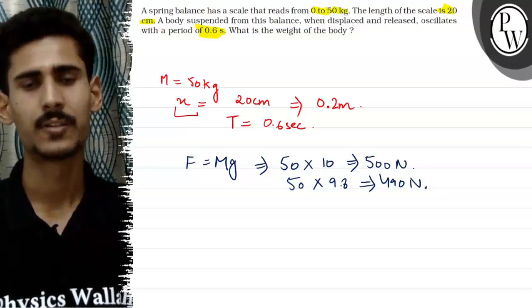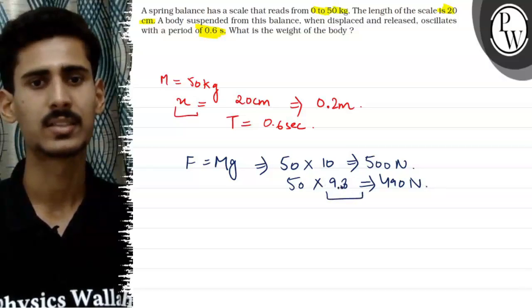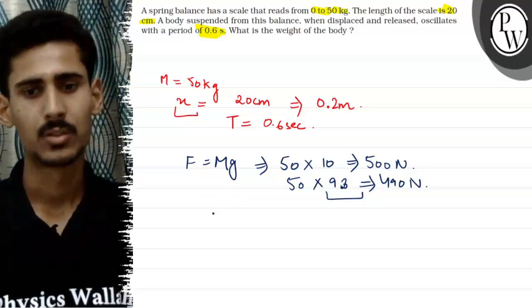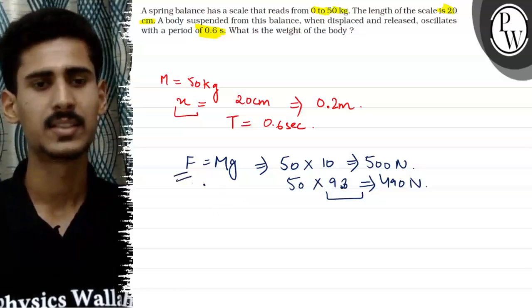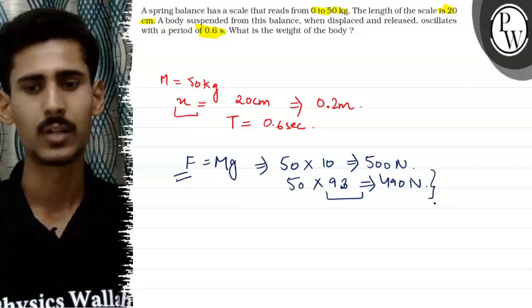And on the safer side, we take G to be 9.8, which is the exact value of G. So the maximum force which the spring balance can sustain is equal to 490 Newtons.